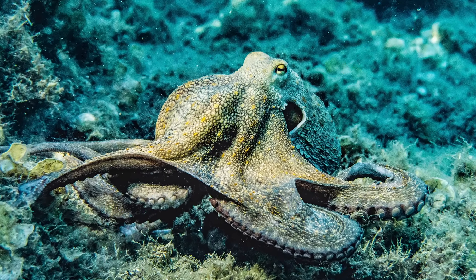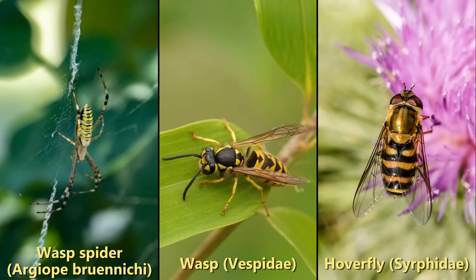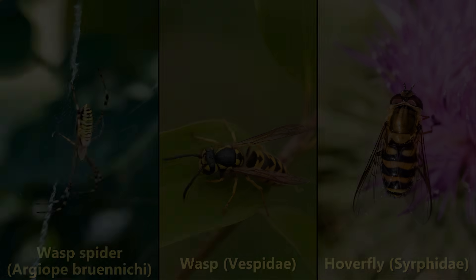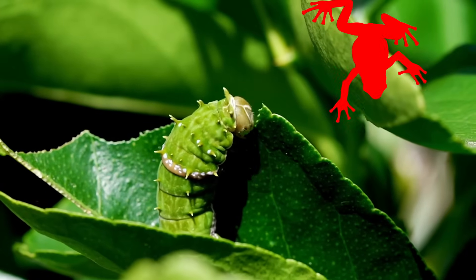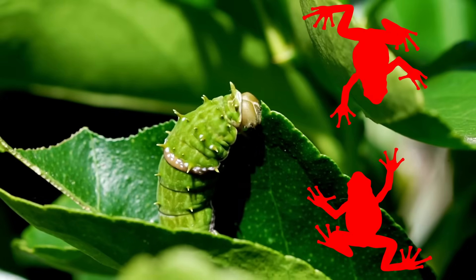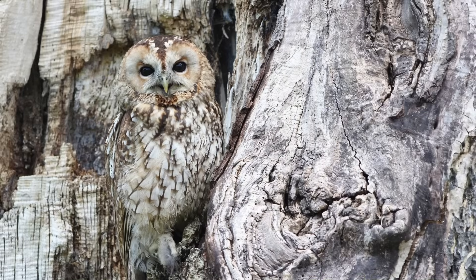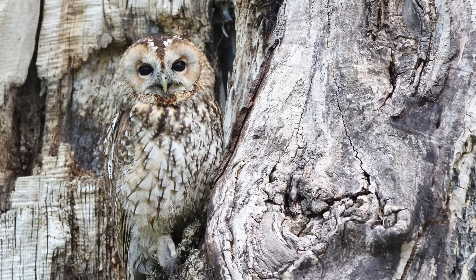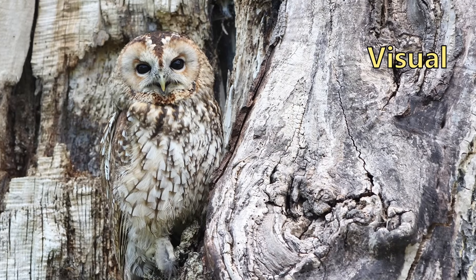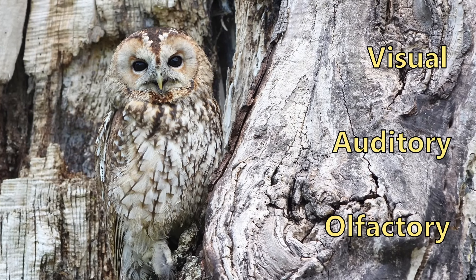Mimicry is a phenomenon characterized by the close superficial resemblance of two or more organisms that are not closely related taxonomically. In easier words, mimicry describes the act of imitation from one species to other animals, plants or even inanimate objects. There are different forms of mimicry, including visual, which is the most common, auditory and olfactory imitation.